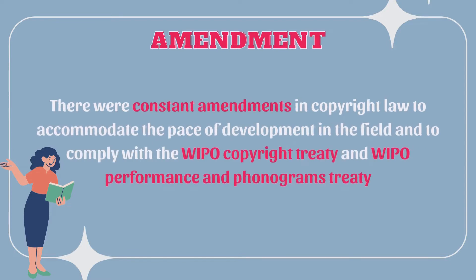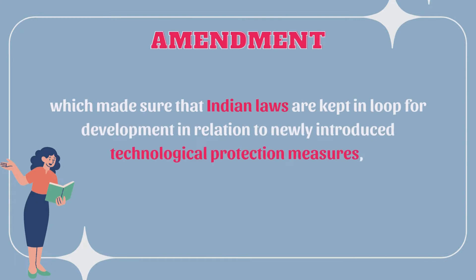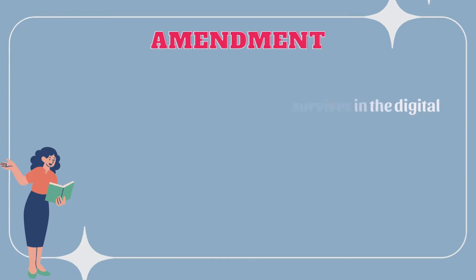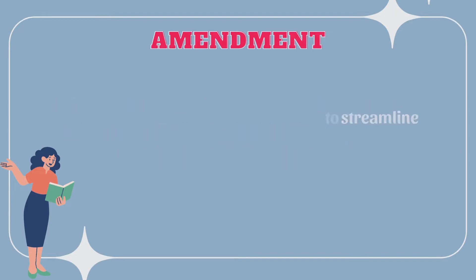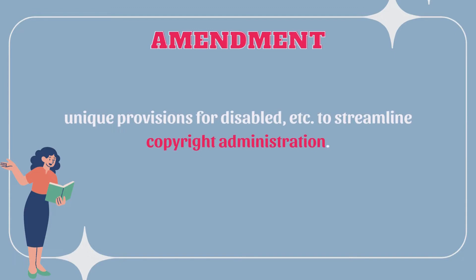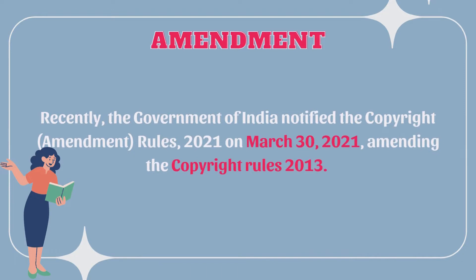There were constant amendments in copyright law to accommodate the pace of development in the field and to comply with the WIPO Copyright Treaty and WIPO Performance and Phonograms Treaty, ensuring that Indian laws are kept in loop for newly introduced technological protection measures. This ensured that fair use survives in the digital world by providing unique provisions for fair use, author-friendly changes, and unique provisions for the disabled, to streamline copyright administration. The Government of India notified the Copyright Rules 2021 on March 30, 2021, amending the Copyright Rules 2013.